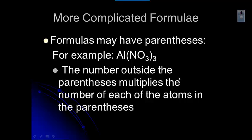Formulas can also have parentheses. For example, aluminum nitrate has NO3 in parentheses with a three outside. That means the number outside the parentheses multiplies each of the atoms inside. So in that formula you have one aluminum, three nitrogens, and nine oxygens.